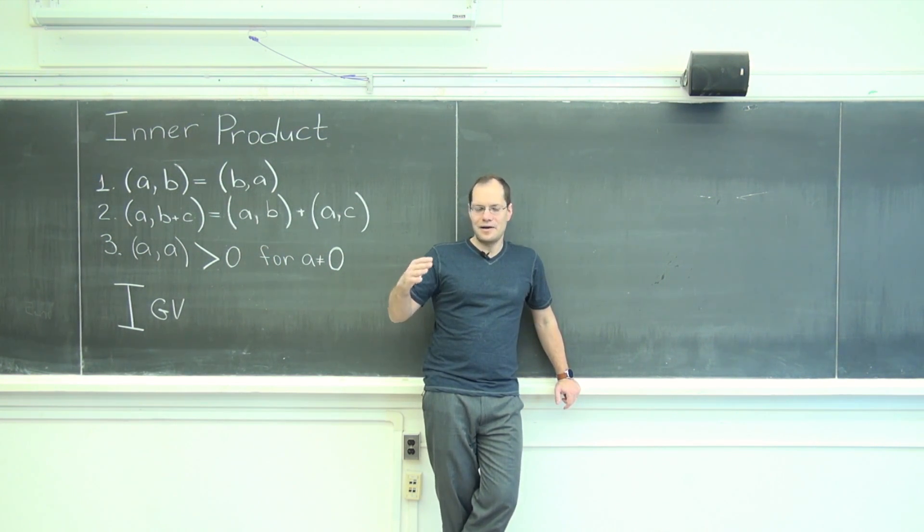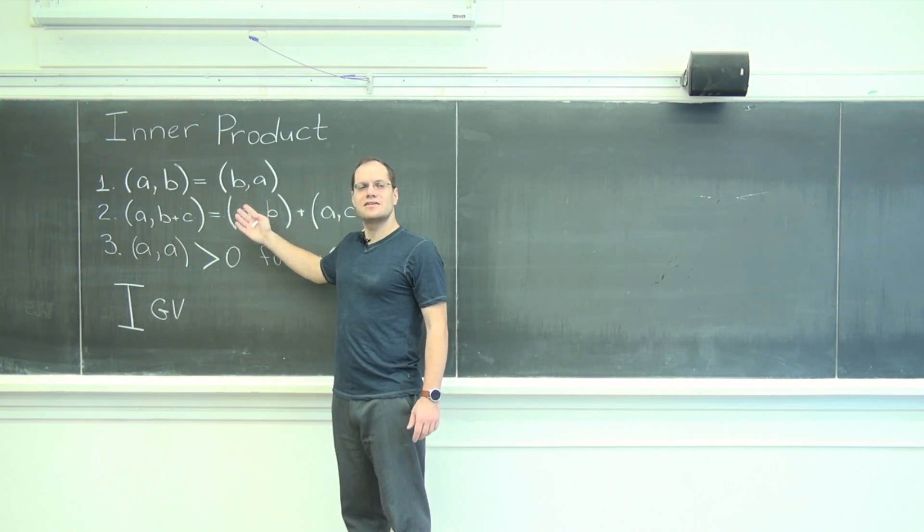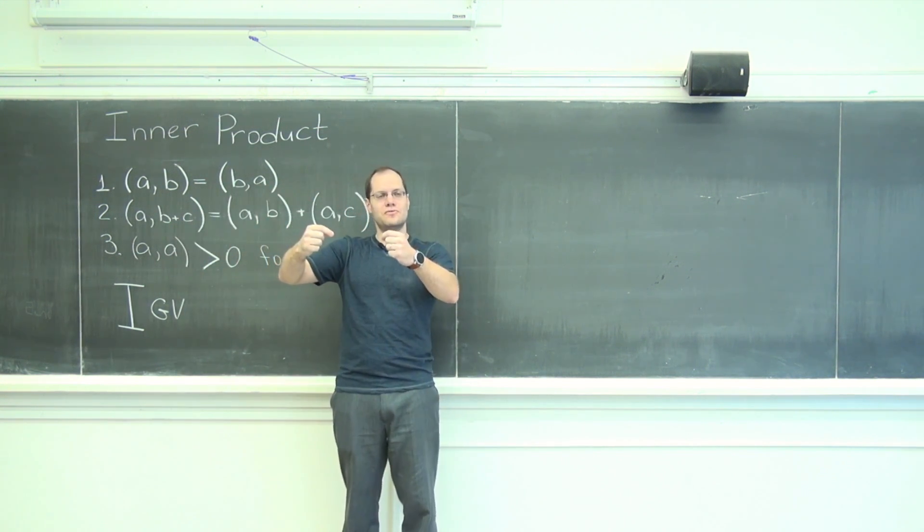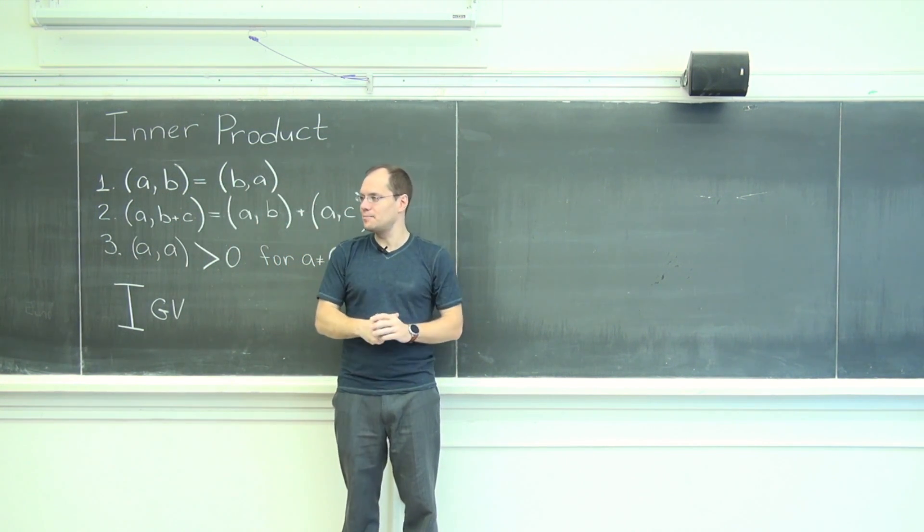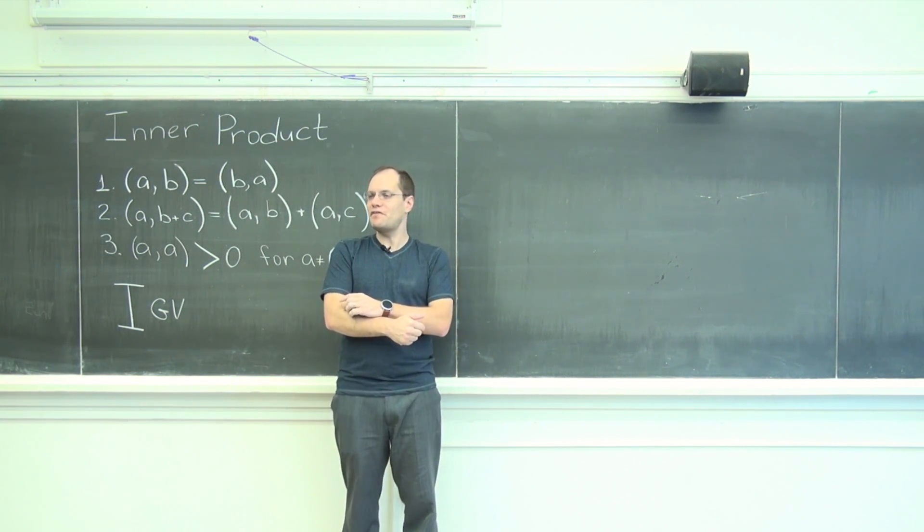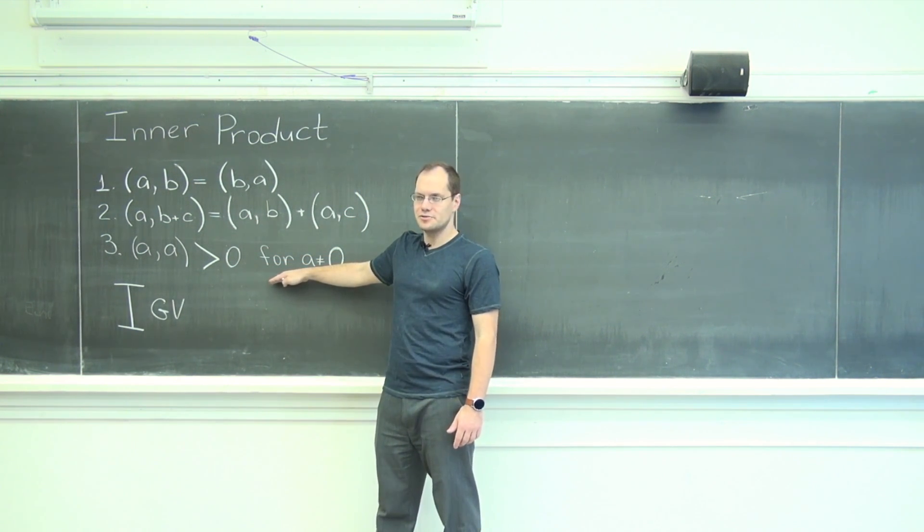And then I will give you a few examples of operations that technically qualify as candidates. And to qualify as a candidate, you have to take two vectors as an input and produce a number as an output. But in one way or another, they will fail to be inner products. In other words, they will not satisfy one of these axioms.